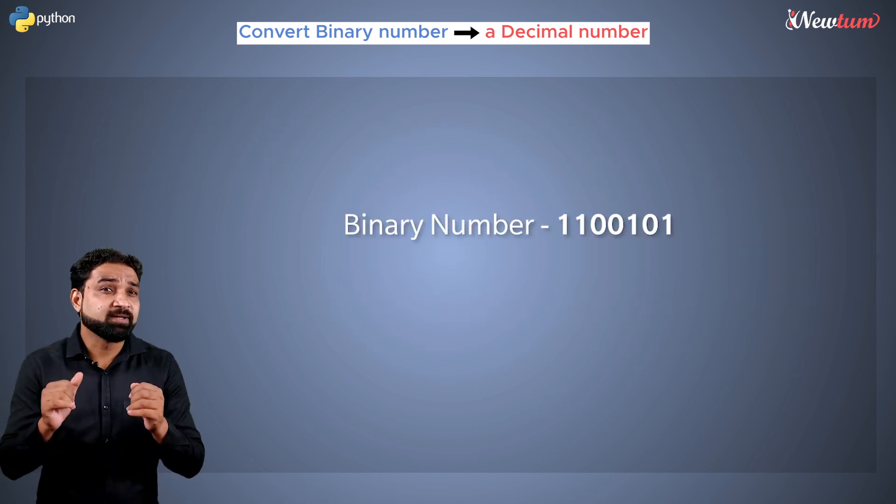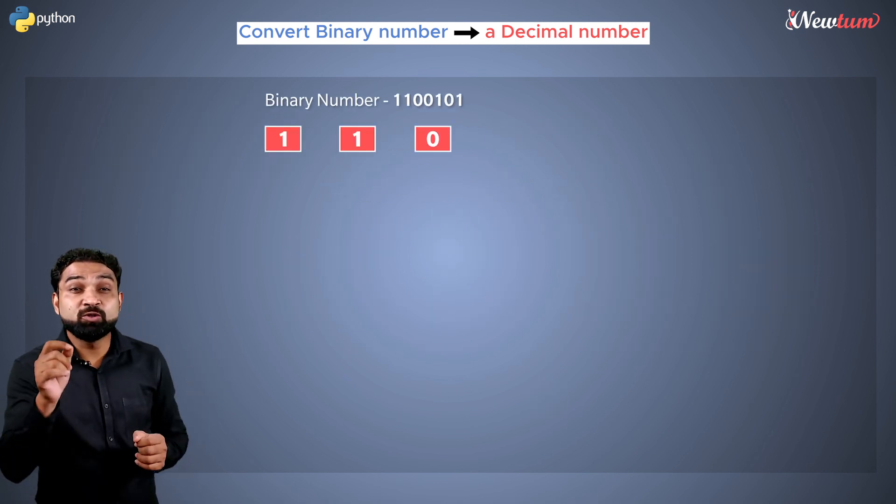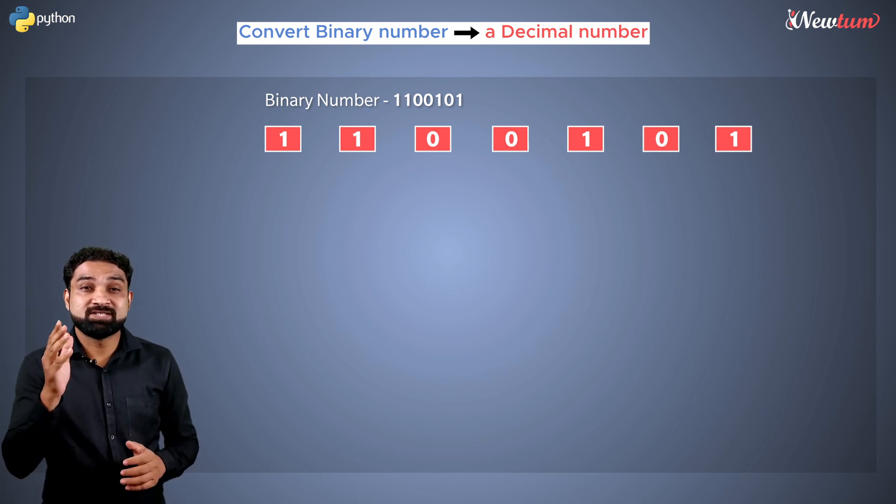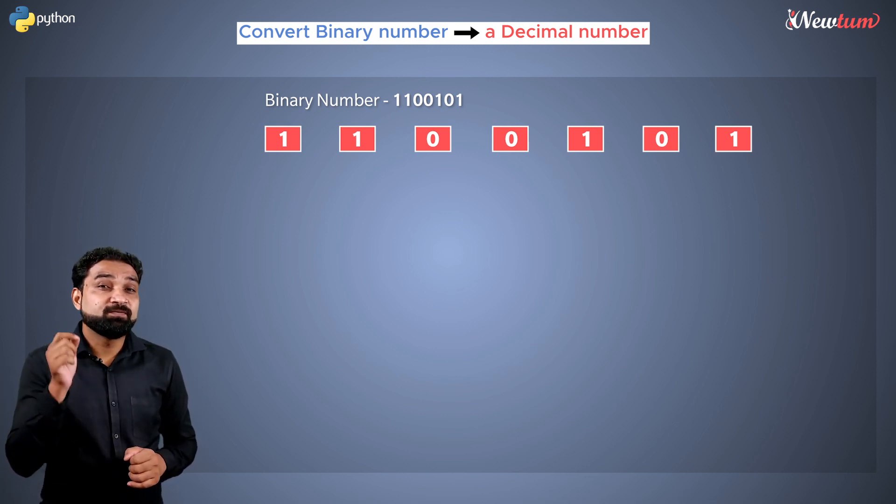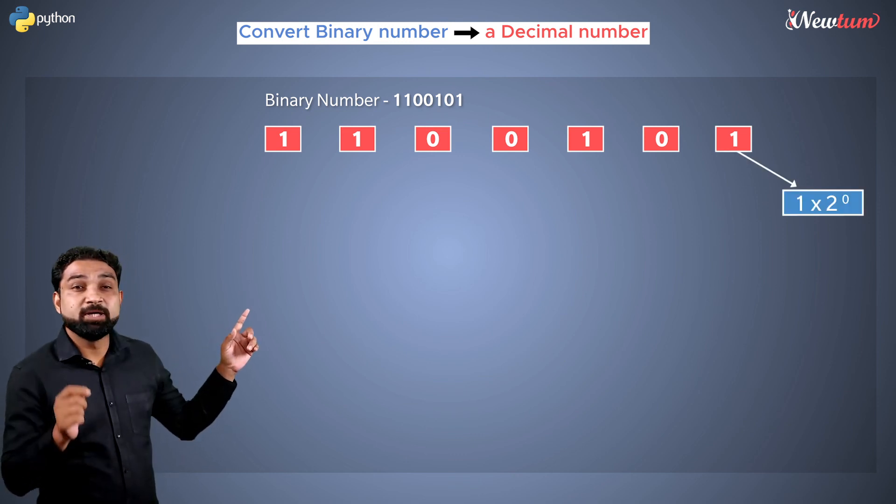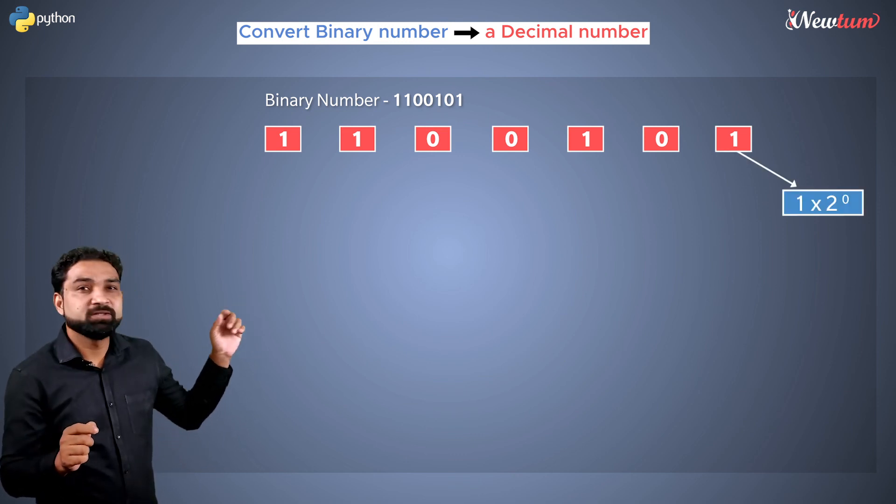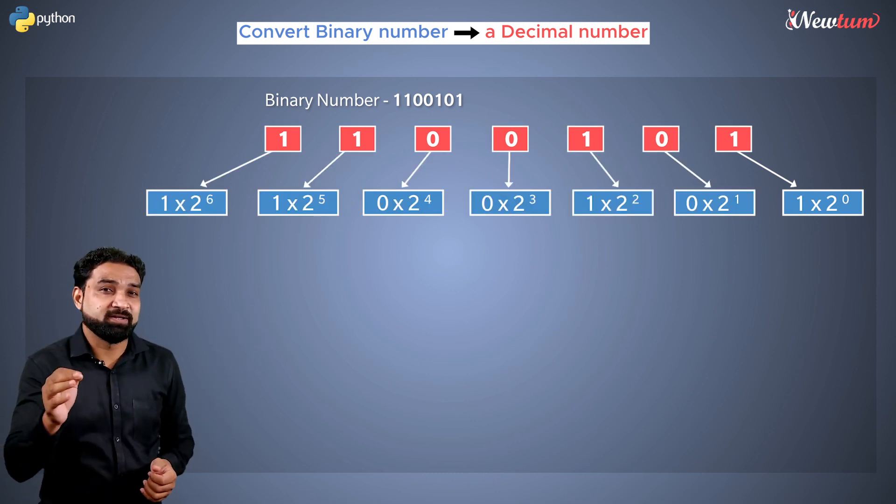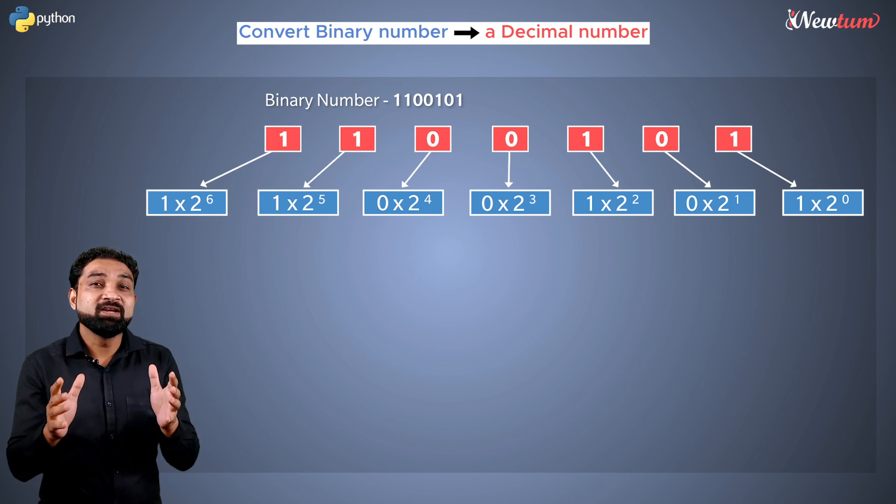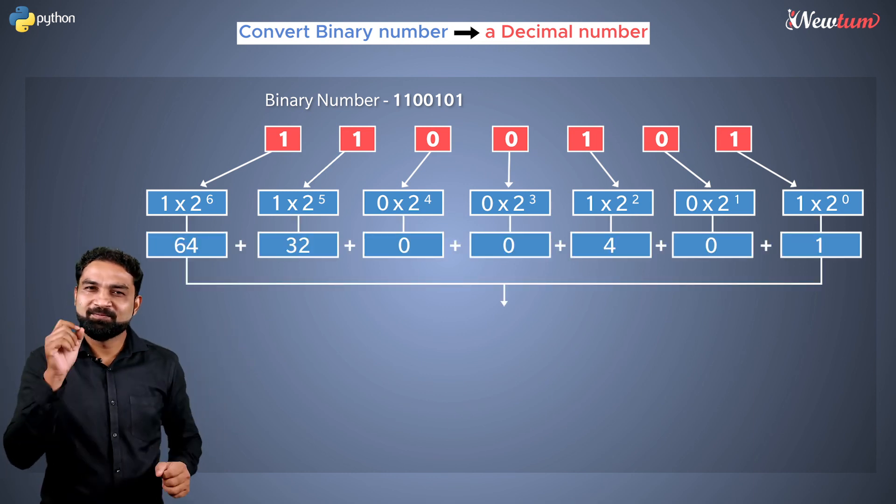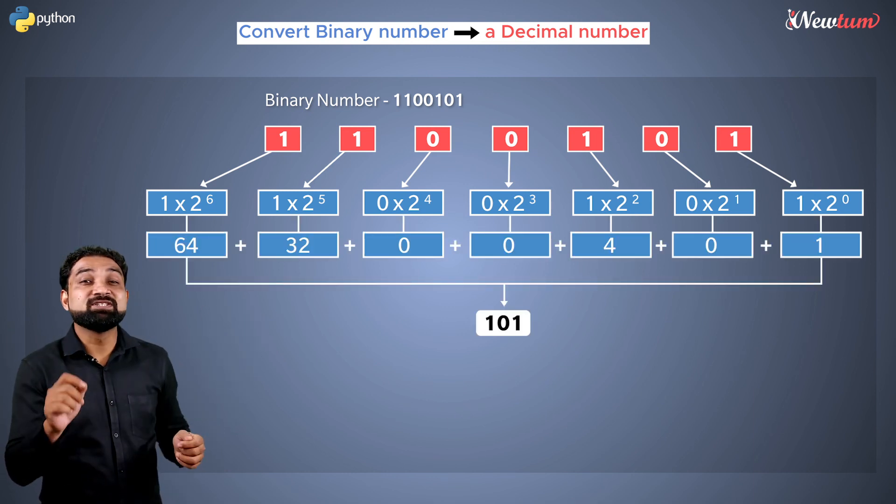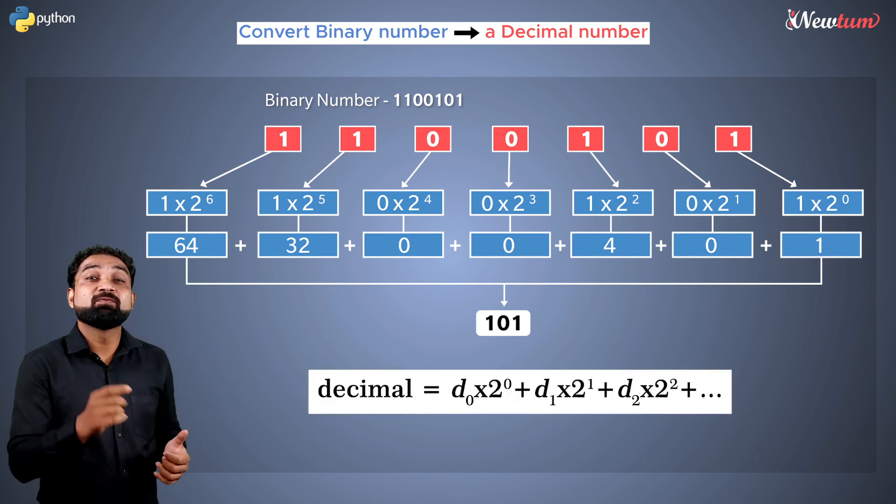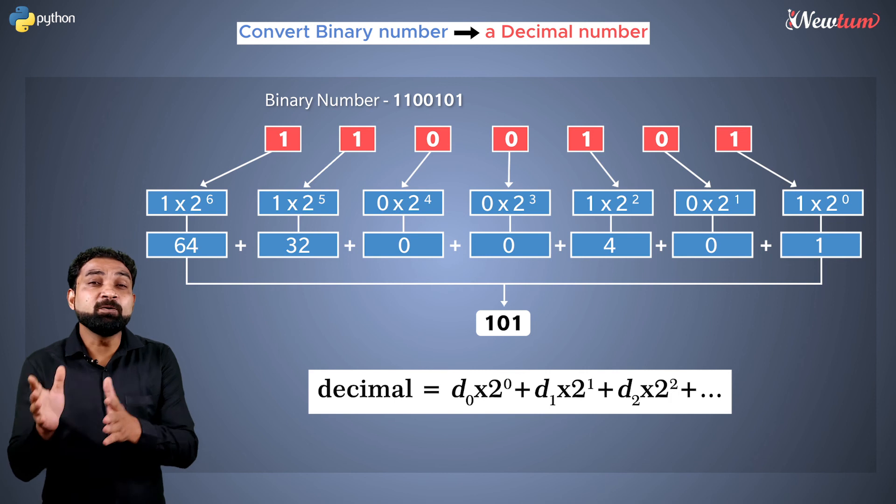If you look at this binary number, that is 1100101, the number of digits are 7. So the first expression will be 1 multiplied by 2 to the power 0, same till the end, just increasing the exponential factor. And then we will sum them all. The answer is 101. This is the general formula for converting binary to decimal.